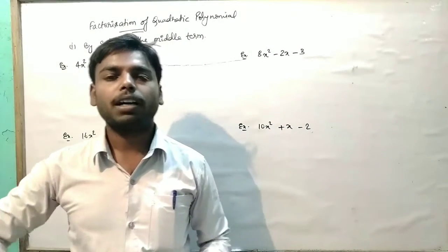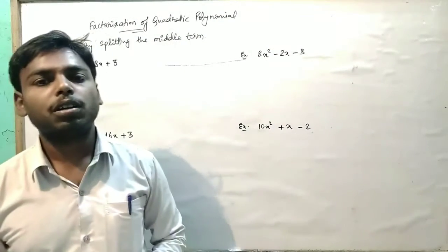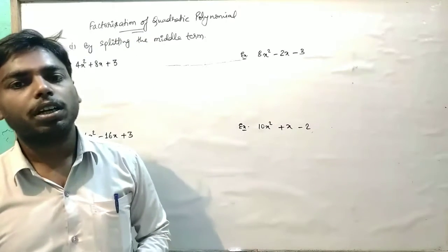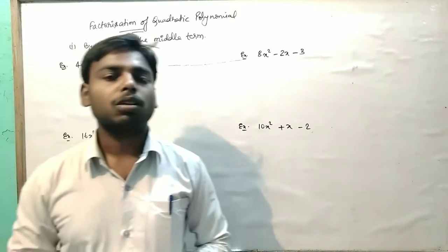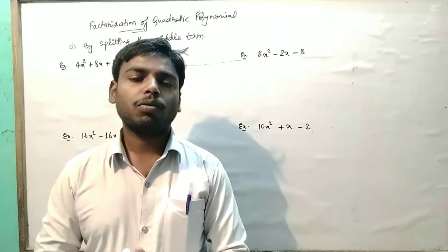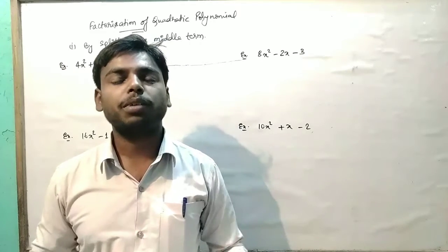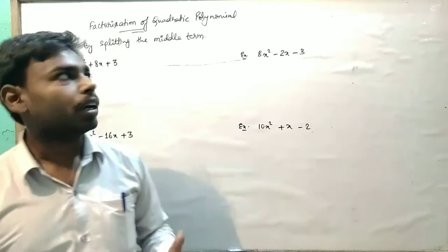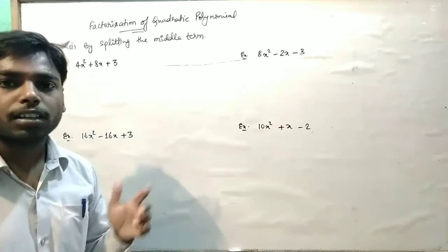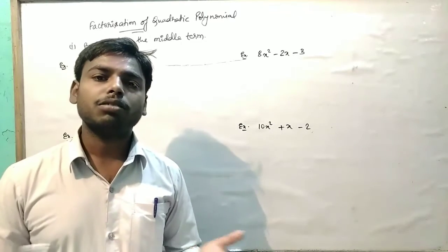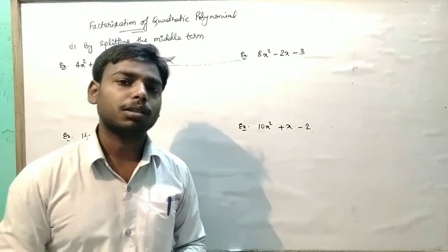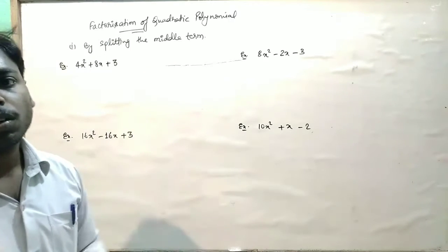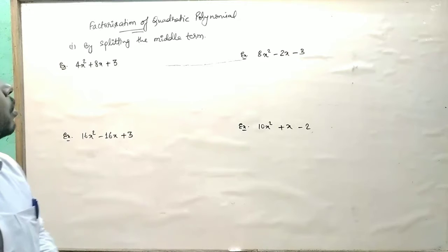Hello students, this is part 11 of polynomial. In this video, we will see factorization of quadratic polynomial. For factorization of quadratic polynomial, we have two methods. First is by splitting the middle term, and second is by using the factor theorem. First, we see by splitting the middle term.